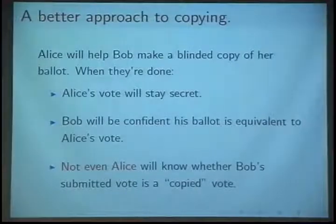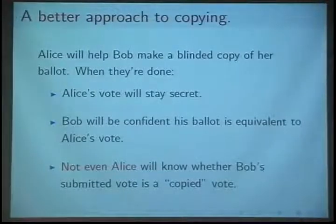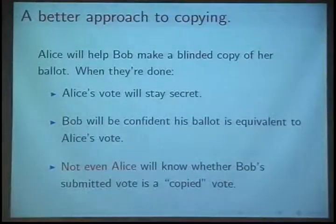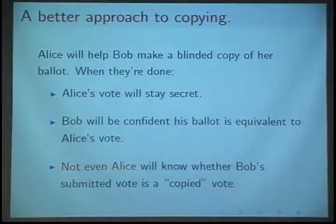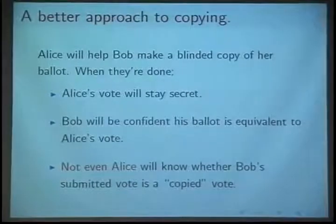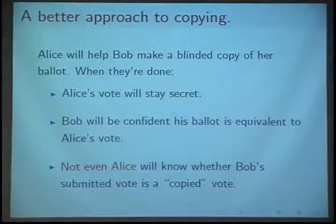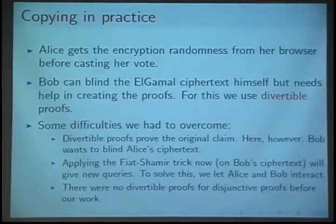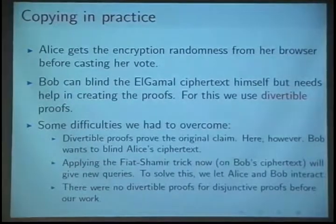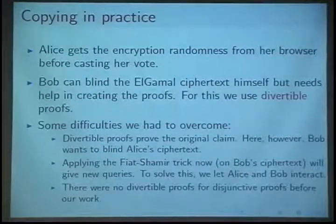The answer is yes. What's going to happen is that Alice's vote will remain secret, Bob will be confident that what he's doing is equivalent to Alice's vote, and not even Alice — because what may happen at the last moment is Bob says he's going to change his mind and not copy Alice's vote — and Alice cannot even figure out if that actually happened or not. In practice, we grab the randomness from the browser when Alice is actually casting her vote.